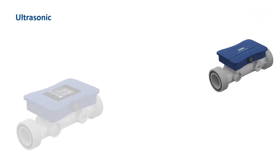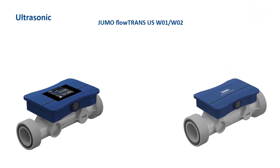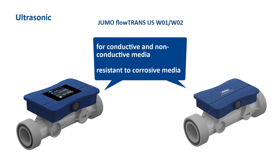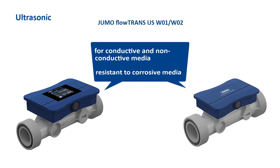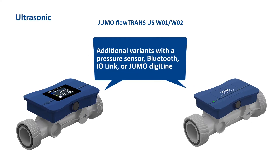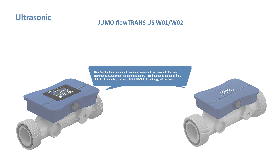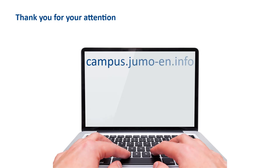Products of the JUMO FlowTrans US series are high-precision ultrasonic flow meters for conductive and non-conductive media. They can be used flexibly in a wide range of processes and are resistant to corrosive media. In addition to pure flow measurement, variants with a pressure sensor, Bluetooth, IO-Link, or JUMO DigiLine are available. For more information, e-learnings, seminars, and webinars, please visit our homepage.